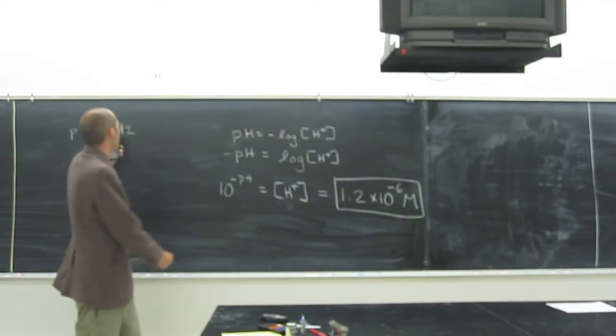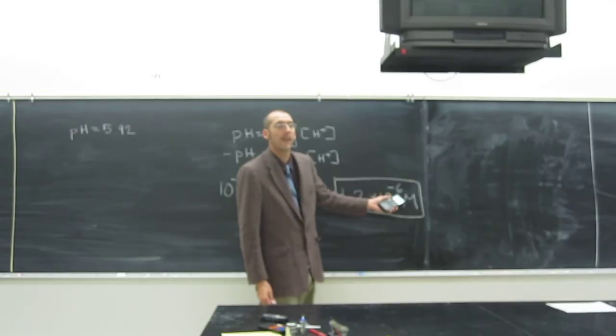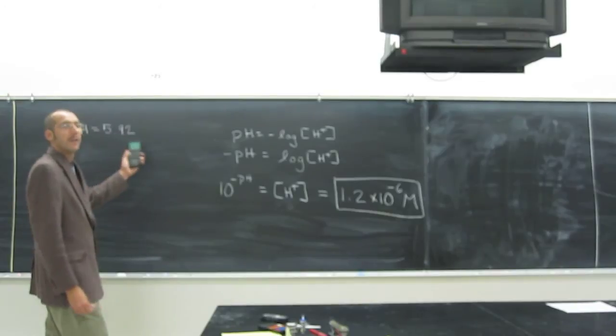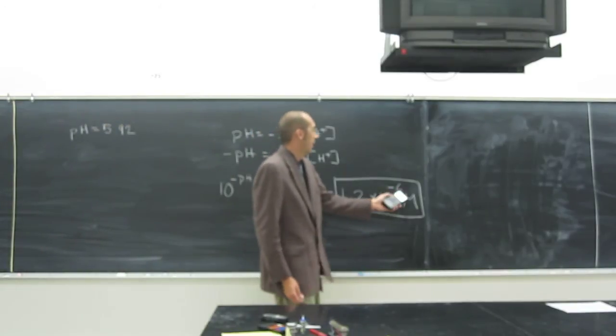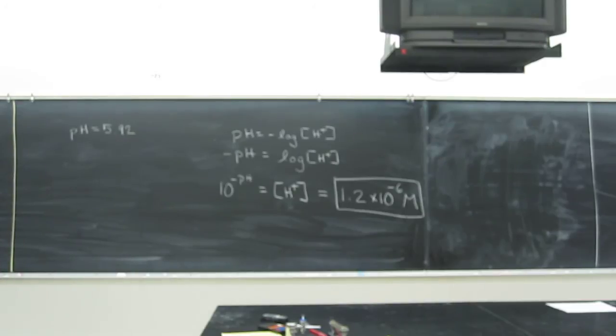And again, remember, this is close to 6, so we should be thinking that we're going to have something like negative 6 here. If it was like 6.12, this would be still around 6, so it would be to the negative 5 at that point.